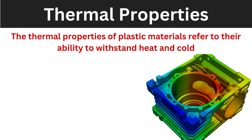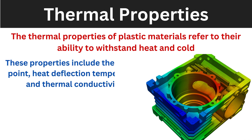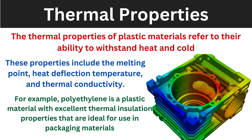The thermal property of plastic material refers to their ability to withstand heat and cold — it is related to temperature. This property shows that the material can withstand different temperature conditions, whether cold or heat, and should survive under all those conditions. Thermal properties include melting point, heat deflection temperature, and thermal conductivity. For example, polyethylene is a plastic material with excellent thermal insulation properties, making it ideal for use in packaging material.